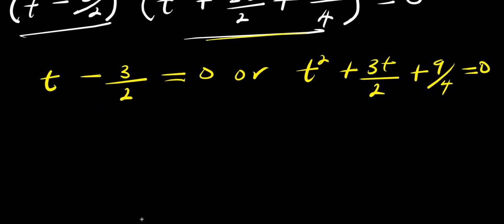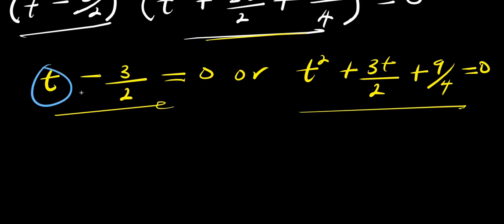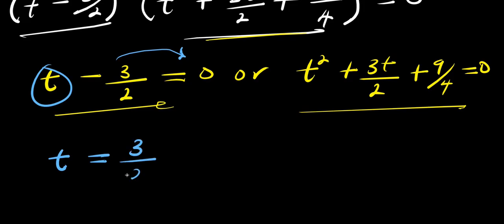We need to solve each factor to find the values of t. Starting with the first one: isolating t by moving negative 3 over 2 to the other side, where it becomes positive, gives our first solution t₁ equals 3 over 2.